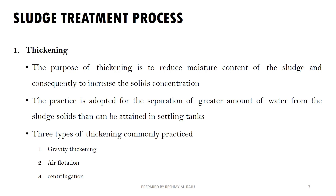First, thickening. The purpose of thickening is to convert sludge from a semi-liquid form to a more solid form. We use a method to reduce the volume and increase the solid concentration. The three methods we use are gravity thickening, air flotation, and centrifugation. Usually, we use settling tanks here.